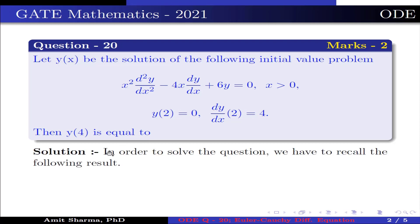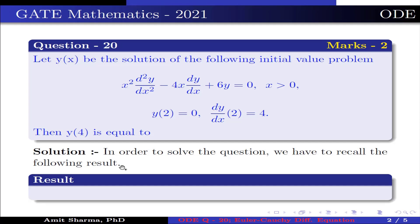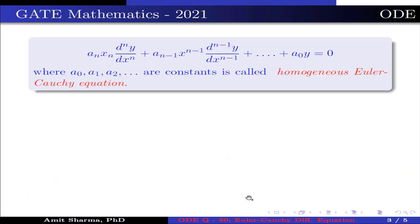In order to solve the equation, we have to recall the following result. A linear differential equation of the form aₙxⁿ dⁿy/dxⁿ + aₙ₋₁xⁿ⁻¹ dⁿ⁻¹y/dxⁿ⁻¹ + ... + a₀y = 0, where a₀, a₁, a₂, ..., aₙ are constants, is called homogeneous Euler-Cauchy equation.